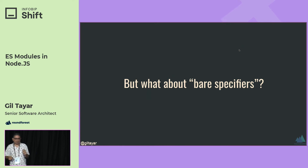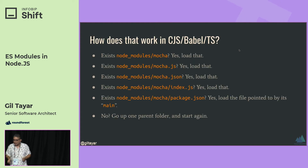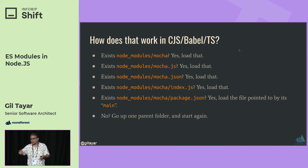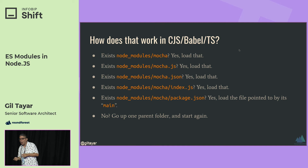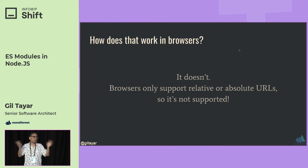But what about bare specifiers? Instead of doing 'dot-slash something', you do 'import from mocha' — just the package name. Does that work? In Babel, CommonJS, TypeScript — yes. It searches node_modules for the mocha file: mocha, mocha.js, mocha.json, then a folder with package.json, then up one folder and repeat. Very complex semantics — definitely not something a browser handles. In fact, bare specifiers in browsers just don't work. Browsers say: 'We don't know what that is, we can't HTTP that.'